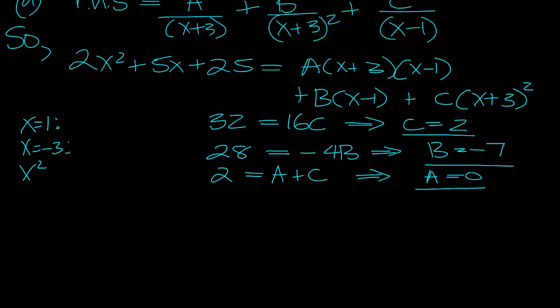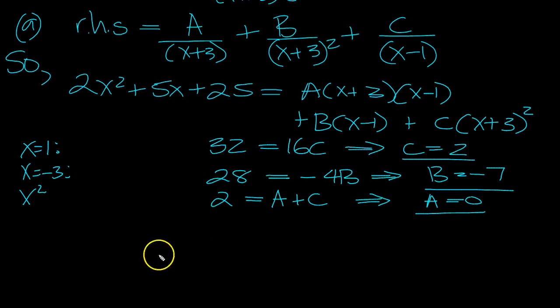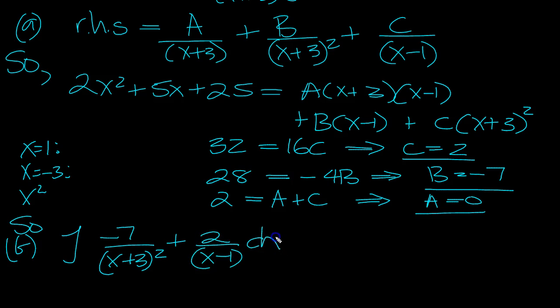So then we're going to want to integrate them. So we've got the integral of, this is part B now, B minus 7 over X plus 3 squared, plus C over X minus 1 dx.